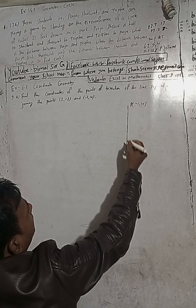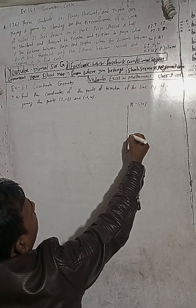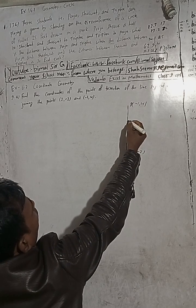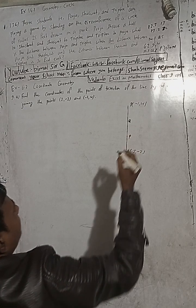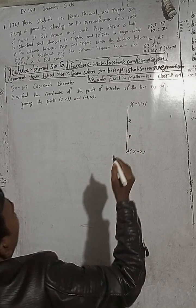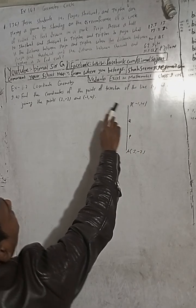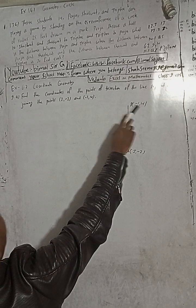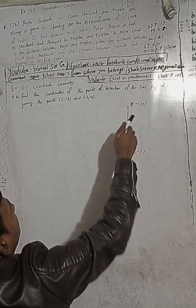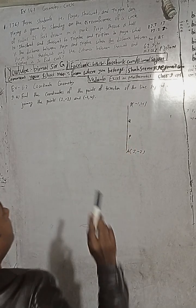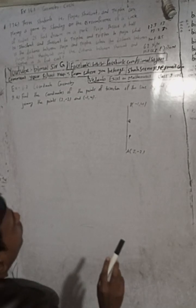Find the coordinates of the point of trisection of the line segment joining the given points. The trisection means dividing the segment into three equal parts.